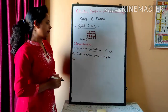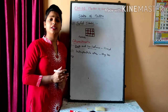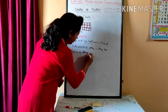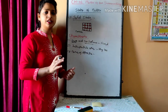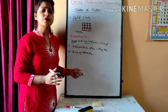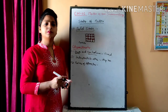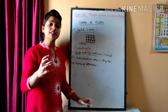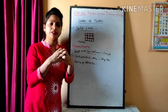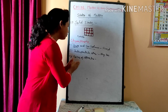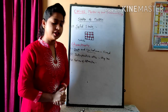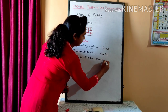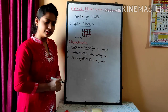The third characteristic of solid state is force of attraction. Since the particles are very closely bound with each other, the force of attraction among the particles of a solid state is very high.